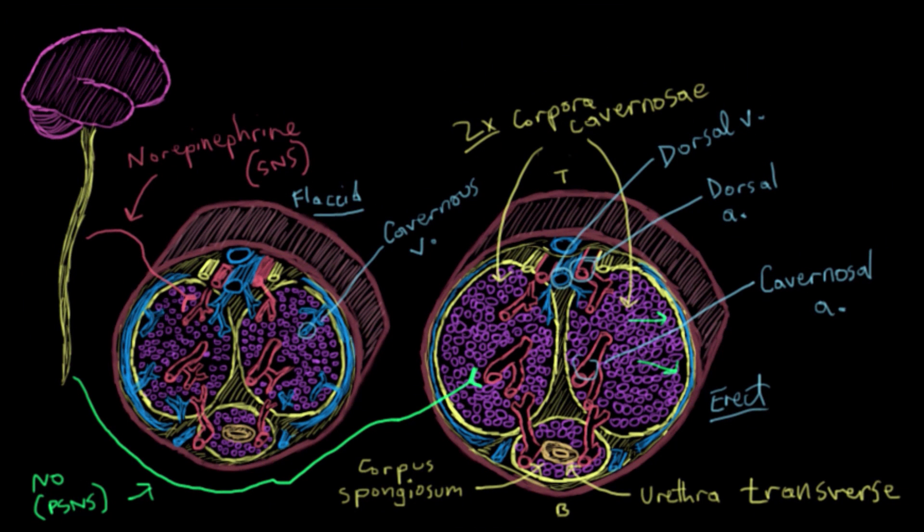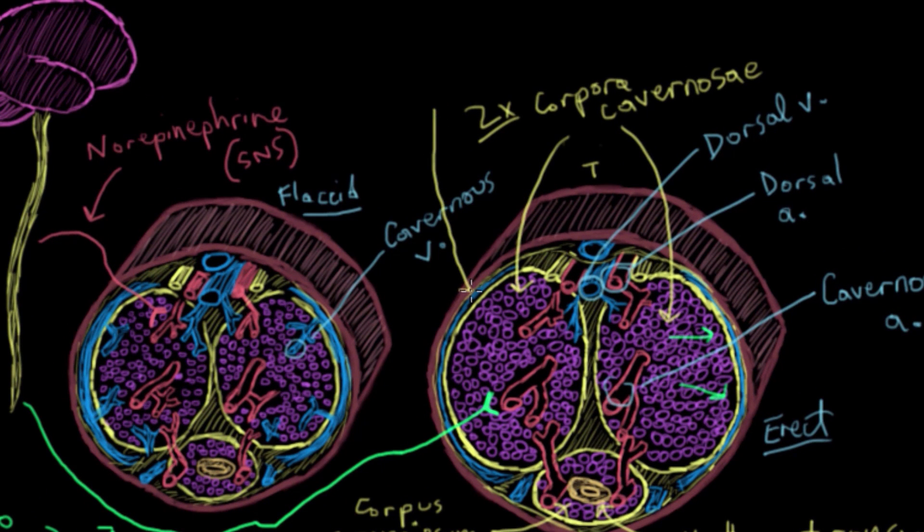One last thing before we move on. You might be thinking, you told us that these arterioles dilate and allow blood into the vascular chambers. Well, what's to stop the penis from filling up indefinitely? We actually have, if you look at these yellow circles here, the three of them, they surround our vascular chambers and they prevent them from over-expanding. These wrappings are called the tunica albuginea. They're just a supportive structural tissue.